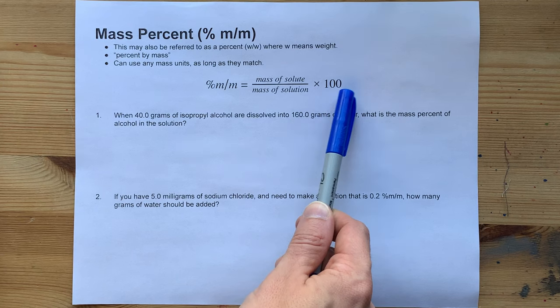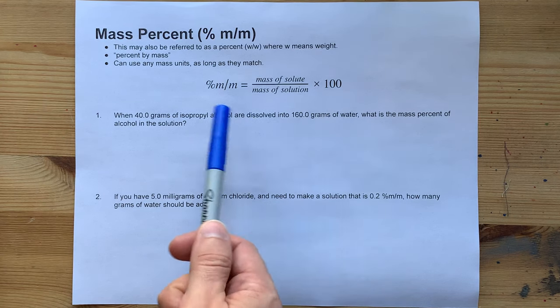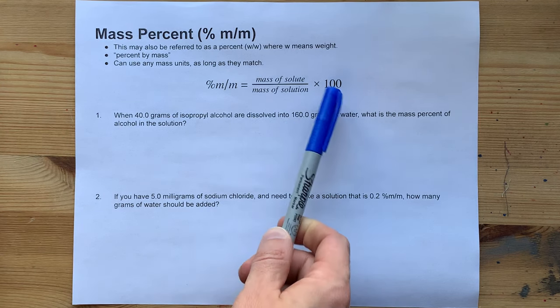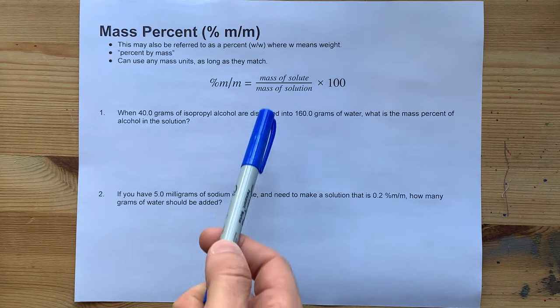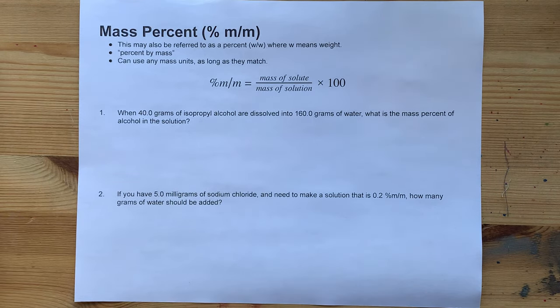If you write times 100 at the end, your answer will already have been converted into a percent. If you don't write that times 100, you'll have to convert your decimal answer to a percent on your own.